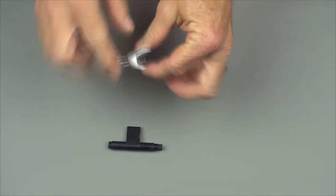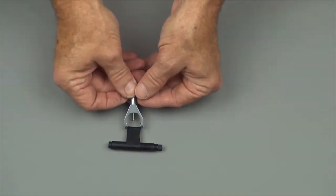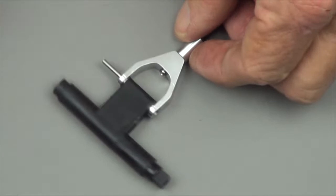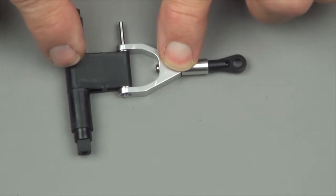You put that back in, get that tight, and then you're going to put this back together. When you put this back together, you need to be careful that there are two bearings in the A-arm.